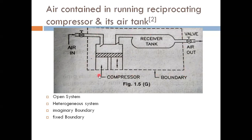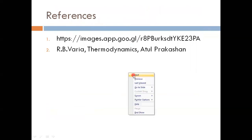In this lecture we discussed different boundaries — fixed boundary, real boundary, movable boundary, and imaginary boundary — and also discussed various systems: how they are classified as open, closed, or isolated, and whether they are homogeneous or heterogeneous. This will be useful for better understanding of thermodynamic systems, boundaries, and surroundings. These are the references. Thank you.